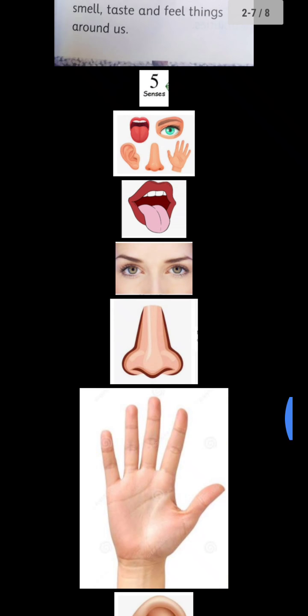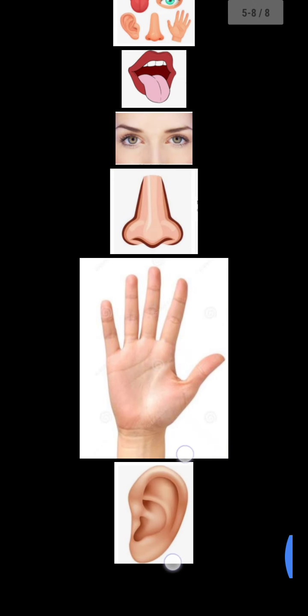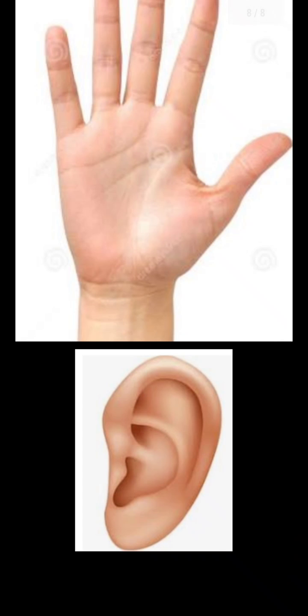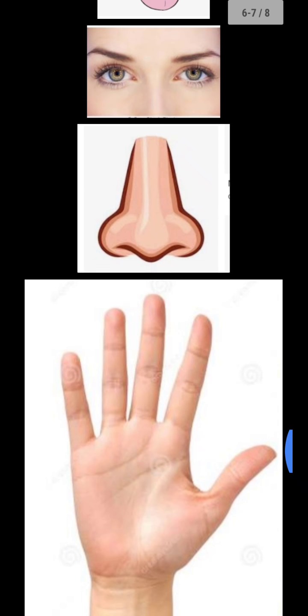Now come to the ear. It is also called sense of hearing. With the help of it, we can listen to different types of voices. Ear ki help se hum different taray ki awazon ko sun sakte hain. I think sense organs are now clear to you from this discussion.